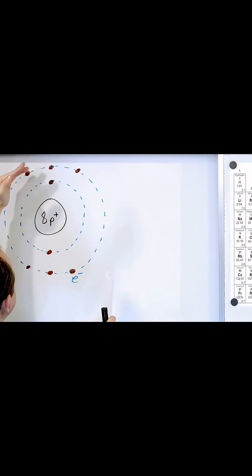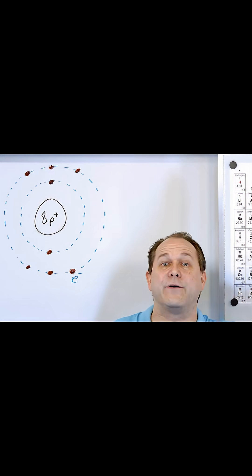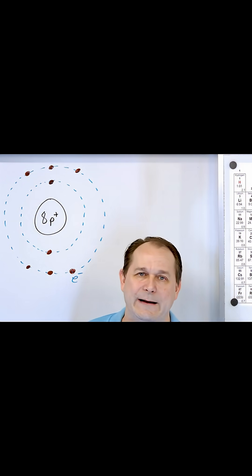And the next one would not even be in this shell. It would be way out in a radius farther away. And so it can only accept two before it's done filling those shells.